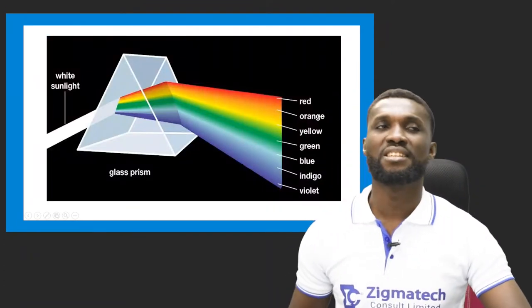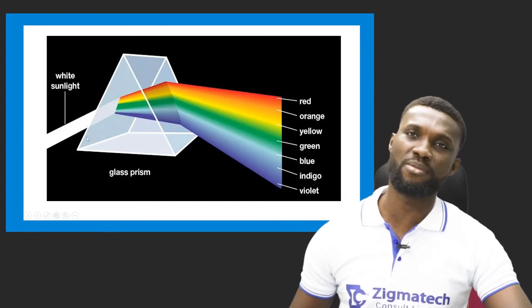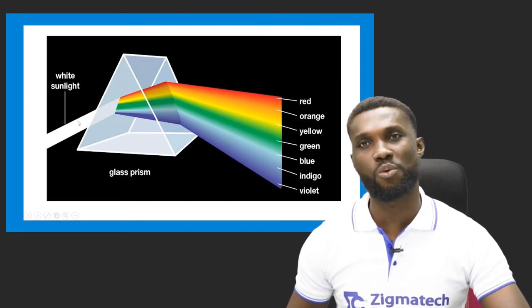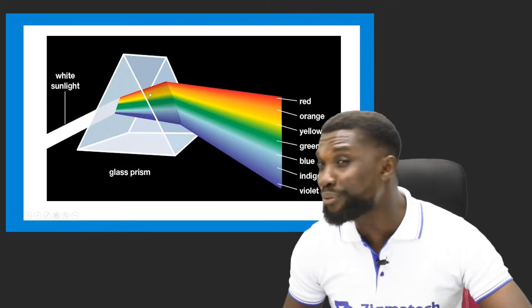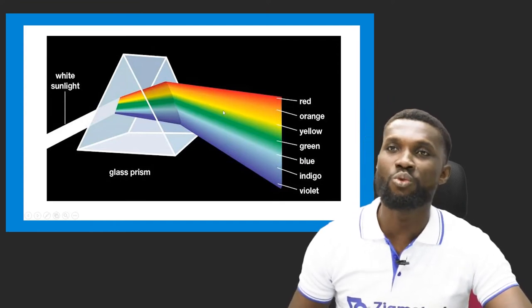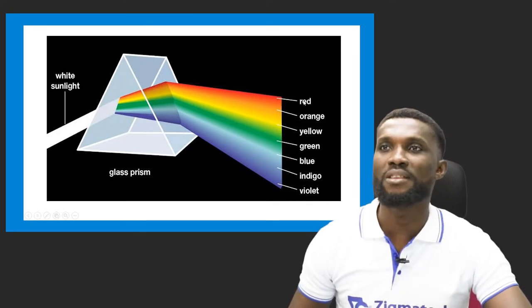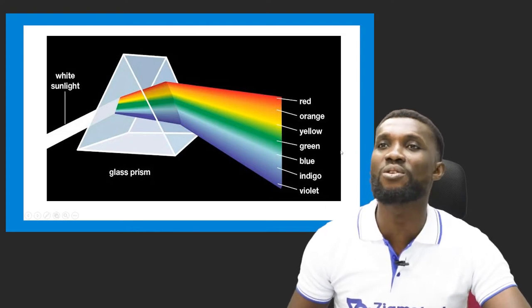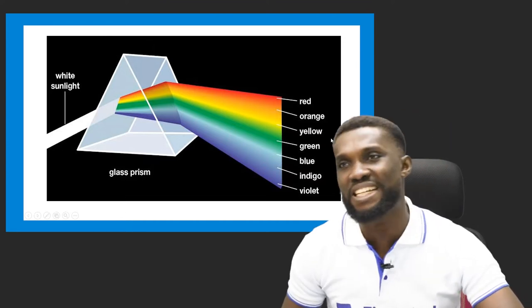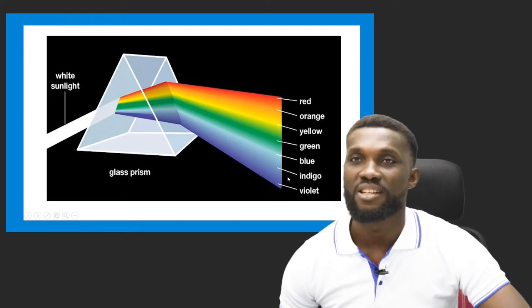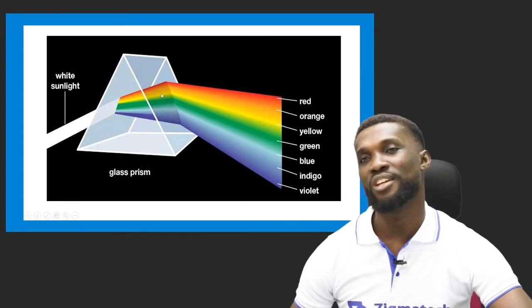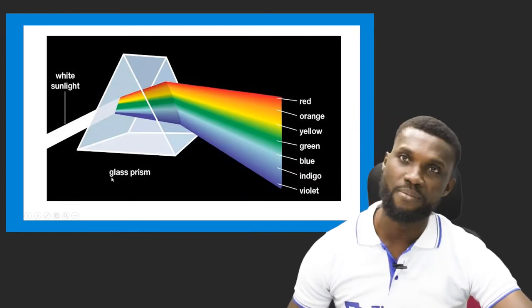This diagram explains exactly what color is. There's a glass prism — it's triangular in shape. If you allow white light — the source of white light — to hit the glass prism, it automatically reflects the seven colors of the rainbow in the spectrum. That is exactly what Isaac Newton tried to explain. You have red, orange, yellow, green, blue, indigo, and violet. This is what color entails. Whenever a question asks you to define color in a diagram, they're asking you to draw this.